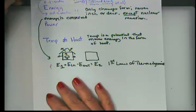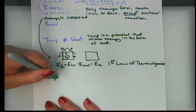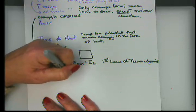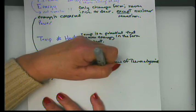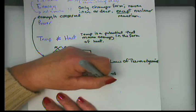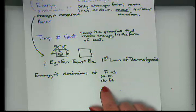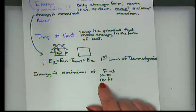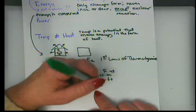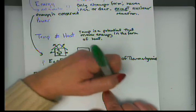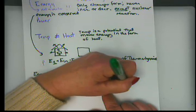Energy has dimensions of force times distance. In SI, force in newtons times distance in meters gives a newton-meter, also called a joule. In US customary, force in pounds times distance in feet gives foot-pounds. A BTU (British thermal unit) equals 778 foot-pounds. These are common units of energy. It's customary to write the force unit first and distance second, so it's 'foot-pounds' not 'pound-feet.'